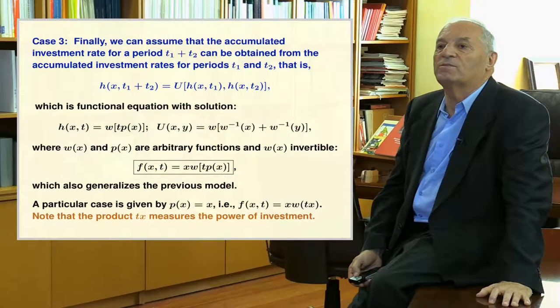Case 3: the accumulated tax rate for a period t1 plus t2 can be obtained from the accumulated tax rates for periods t1 and t2 as indicated in the formula of the slide, which is a functional equation with the indicated solution. Note that the h function is any associative function, because this was the general solution obtained when solving the associative functional equation. This finally leads to the general solution f, inside the box. Note that this model also generalizes the previous model. A particular case is indicated at the bottom of the slide, where the product of t by x measures the power of the investment, including the amount deposited x and the period of deposit t.